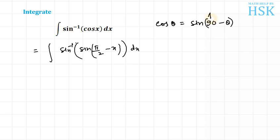And theta can be written as pi by 2, so sine pi by 2 minus theta is equal to cos theta. So this sine inverse and sine cancel out, and I am going to get this as pi upon 2 minus x dx.